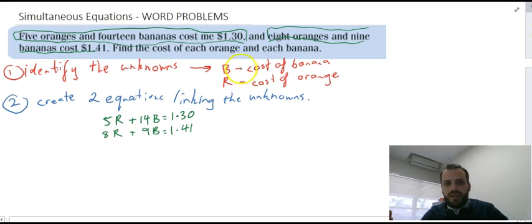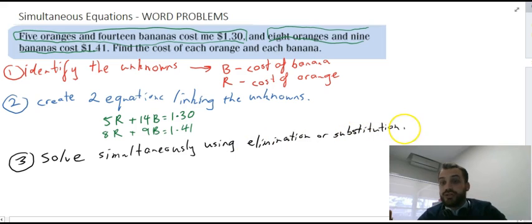Because you can see now that I've identified the unknowns, I've created two equations linking the unknowns. Now that I've created two equations linking the unknowns, I just need to solve them using simultaneous equations. So you can see these line up really nicely: 5R, 8R, 14B, 9B, $1.30, $1.41. It looks like using elimination is going to be the way to go here. I'd have to multiply, say, this by eight, multiply this by five, get the R's the same, subtract through and move from there. I'm not going to do that in this video. You can pause it and do that if you like. I'm going to do another word problem.